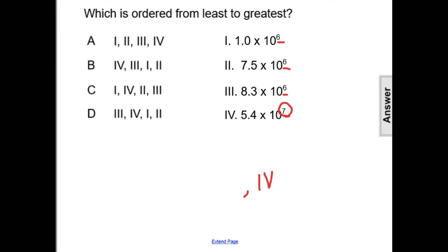However, we now need to look at the coefficients of numbers 1, 2, and 3. We have a 1.0, 7.5, and 8.3. So the coefficients from least to greatest would be 1.0, 7.5, and 8.3.